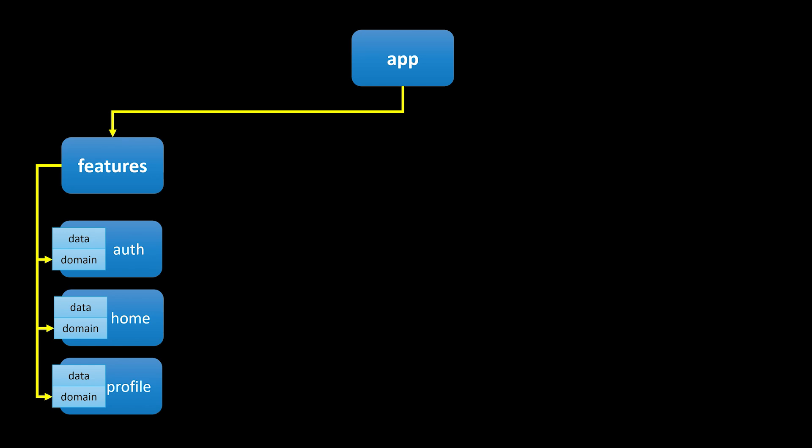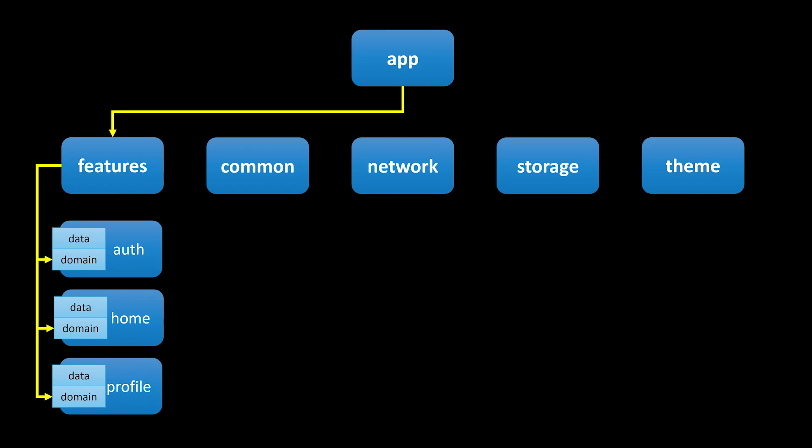After features we have got a bunch of other modules, as you can see here: theme, common, network, and storage. Simple names, right? Common is for basic stuff that we use everywhere, network is where the magic of API calls happens, and storage is for keeping things safe.